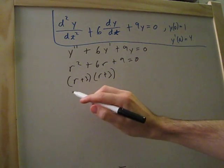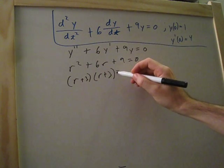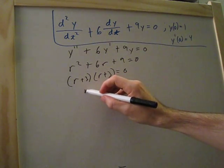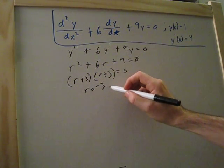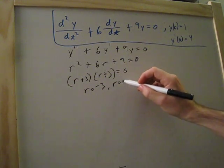All right, and now we'll set that equal to 0. So we know r is equal to negative 3, and r is equal to negative 3.